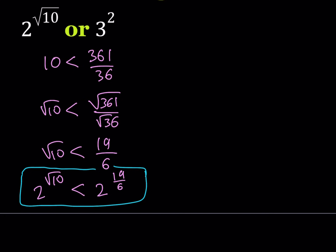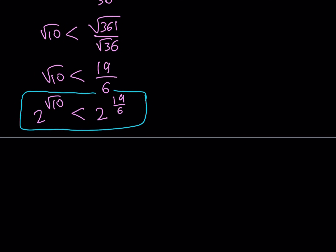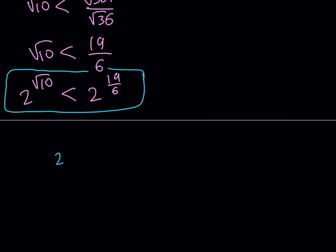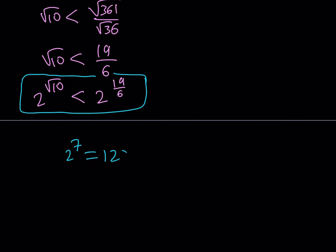The next thing I'm going to do is compare 2 to the power of 19 over 6 to 3 squared. In order to compare them I need to do a couple of different things. We want to be able to compare a power of 2 to a power of 3, but the power of 2 is a fraction, so I'm going to have to expand this a little bit. First of all, let's observe that we can write 2 to the power of 7 as 128. Now I'm going to take a fraction that contains 3 and 2 and raise it to a power.